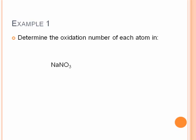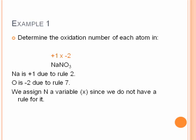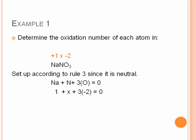Let's determine the oxidation numbers in sodium nitrate. Sodium is plus one because it's in Group 1A — that's rule two. Oxygen is negative two by rule seven. We don't know nitrogen, so we assign it variable x and set up an algebraic equation equal to zero: 1 + x + 3(−2) = 0. Combining constants gives x − 5 = 0, so x equals positive five. Remember to include the plus sign.